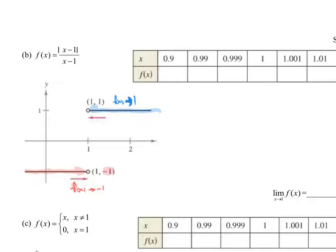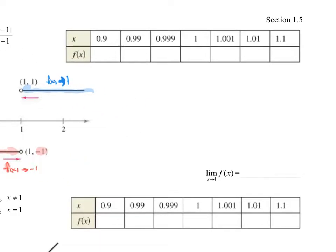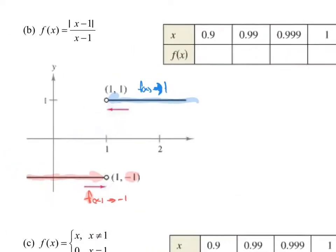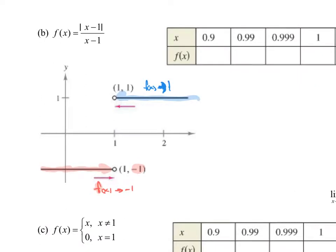If the left and the right are not the same, you would say the limit does not exist. So the limit as x approaches 1 does not exist. Why? Because the limit from the left is not equal to the limit from the right — these two things need to agree; it needs to approach a single value.